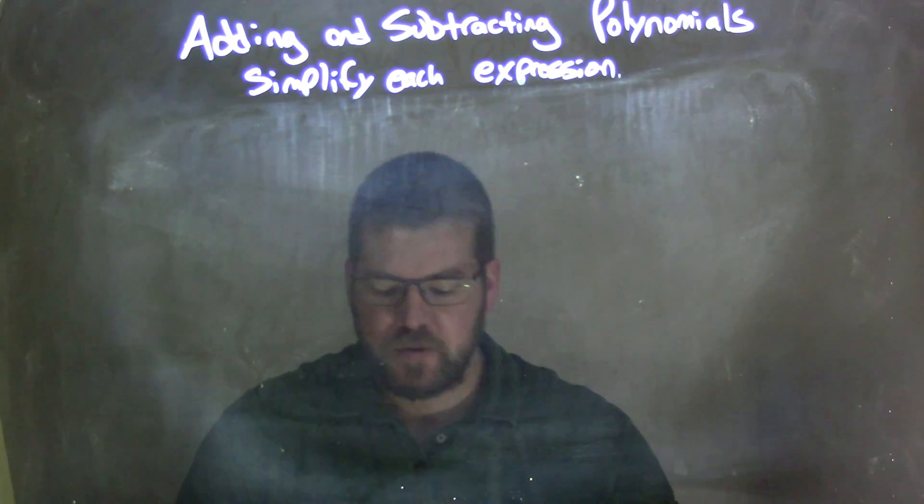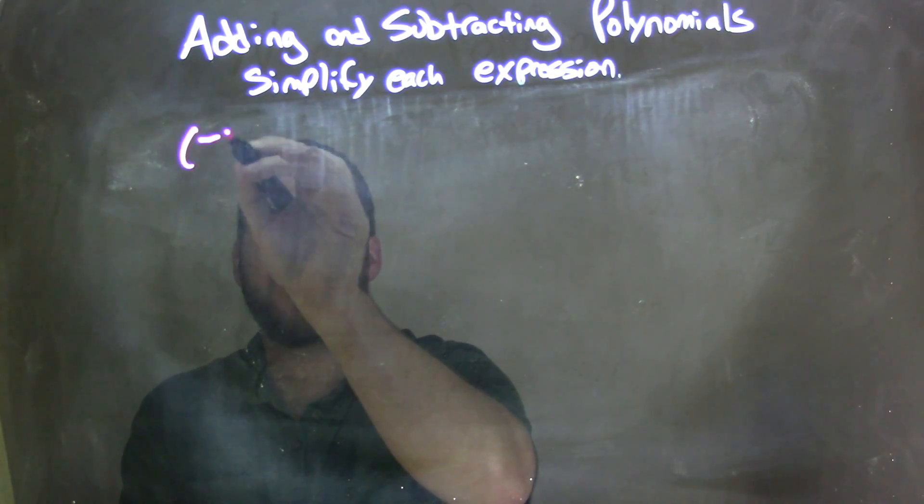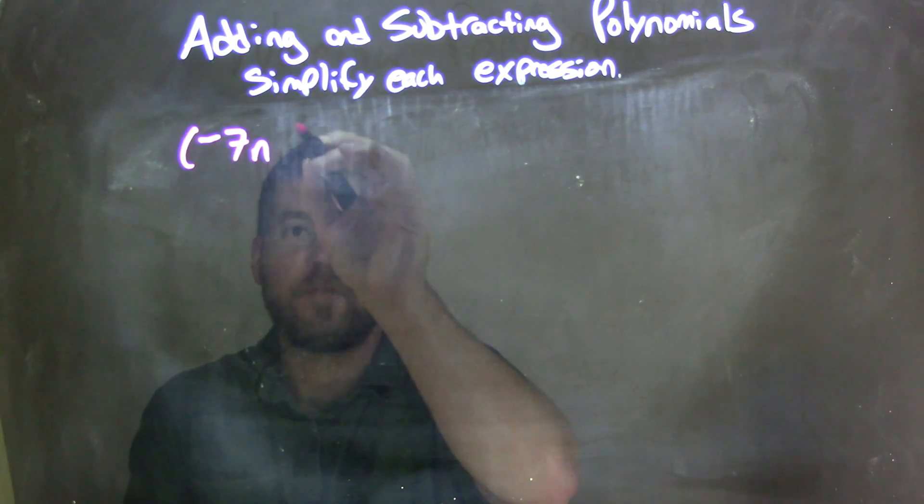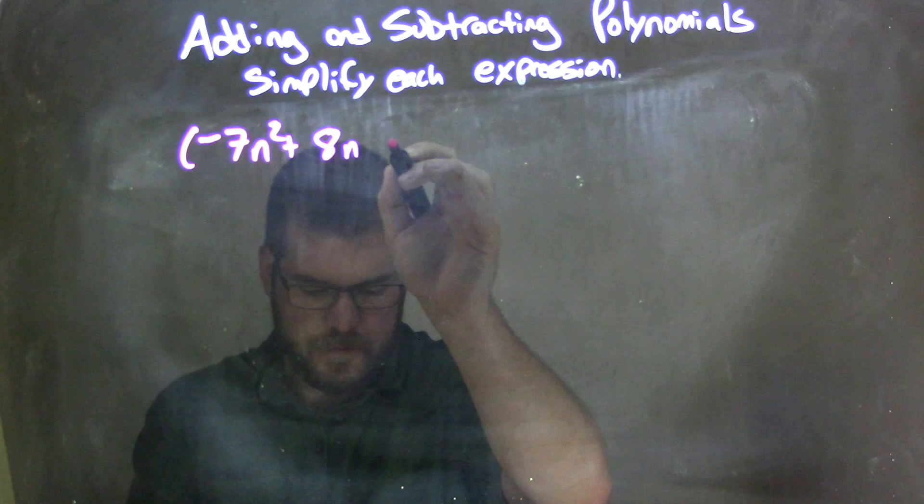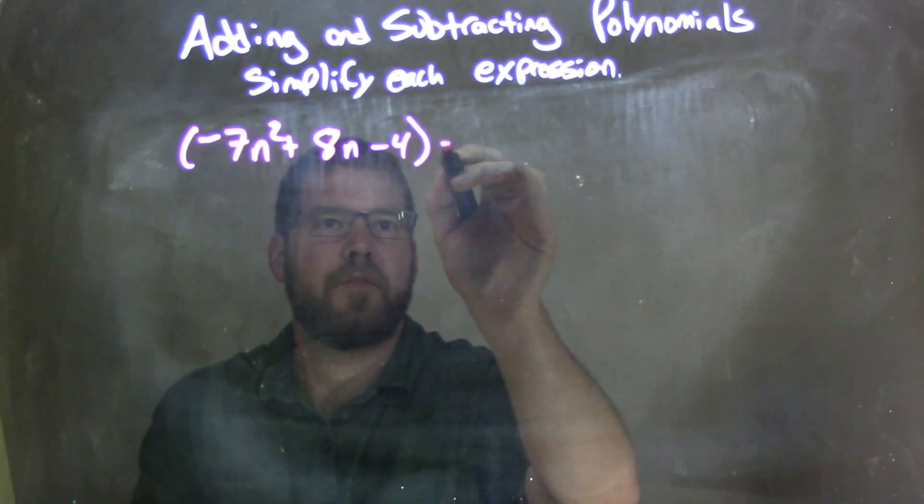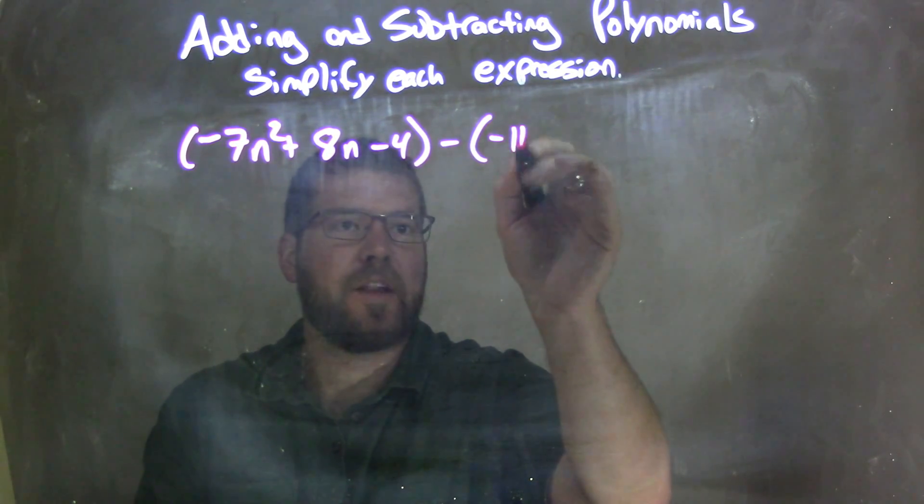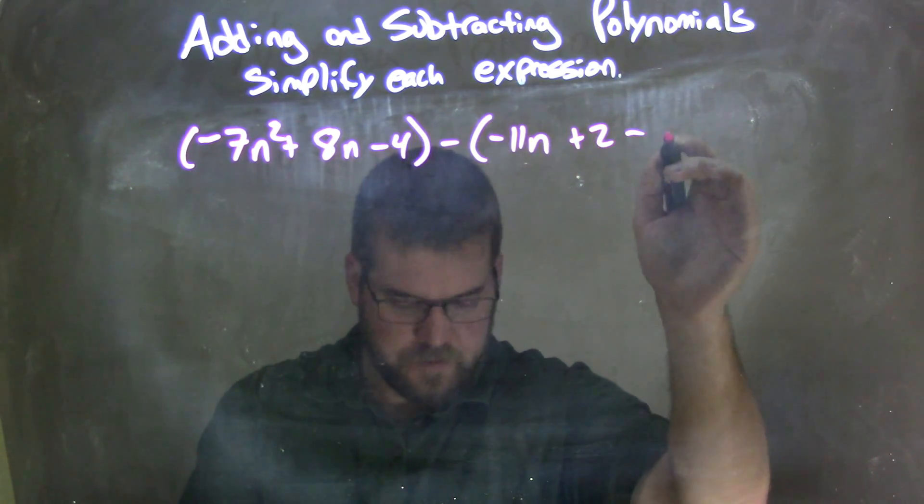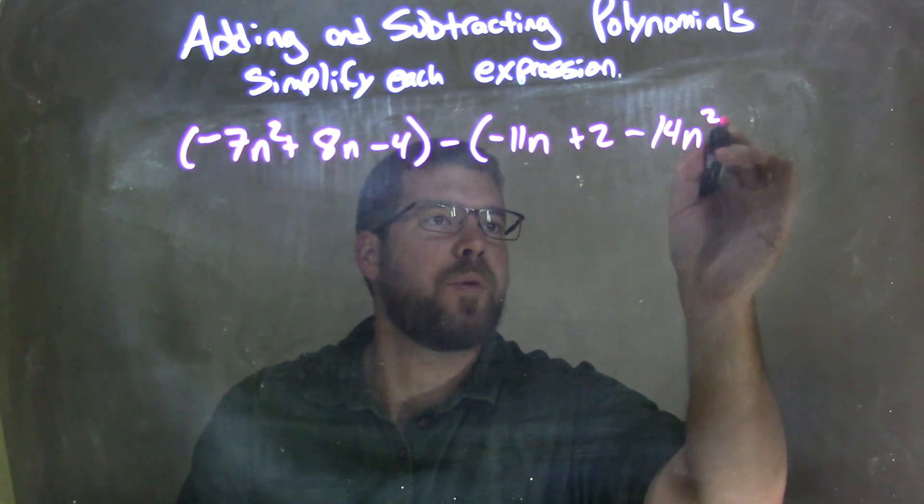So if I was given this expression: negative 7n squared plus 8n minus 4, parentheses, minus, parentheses, negative 11n plus 2 minus 14n squared.